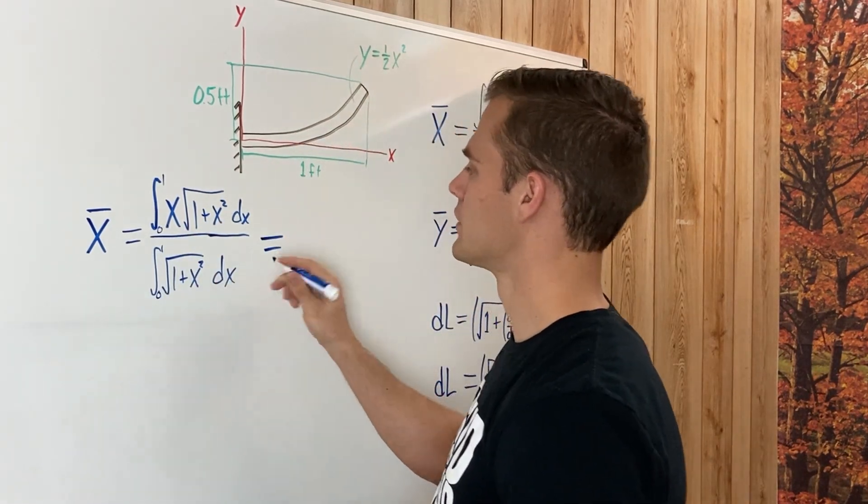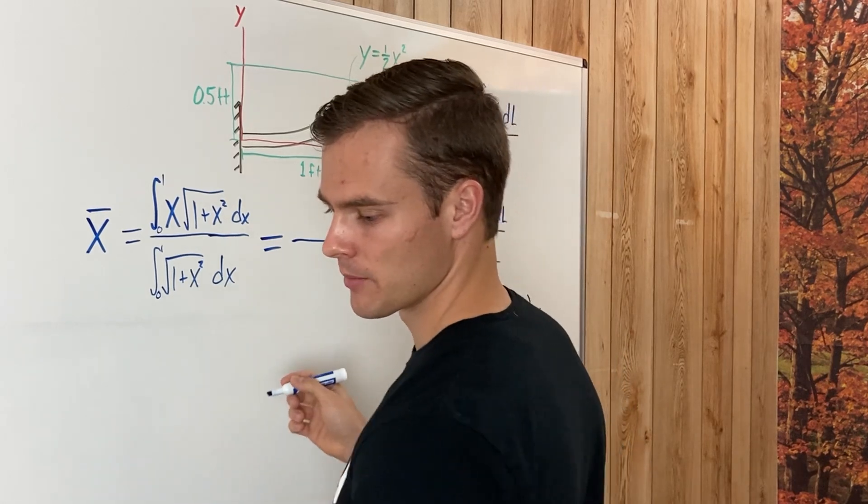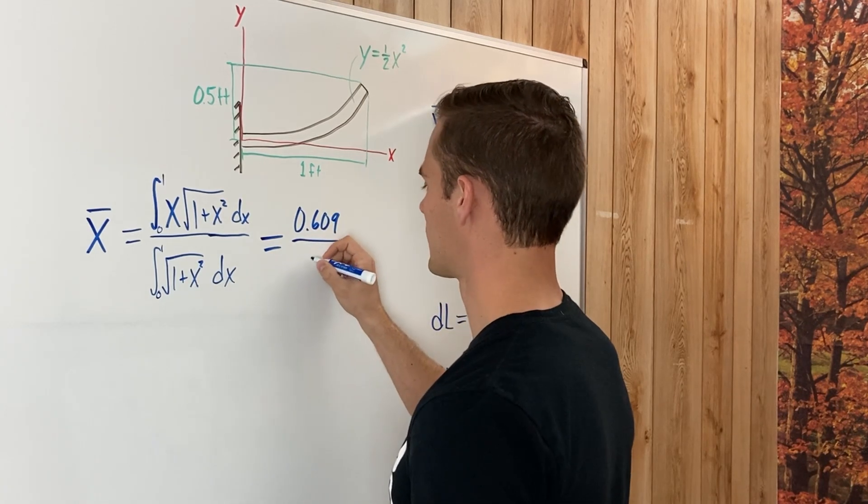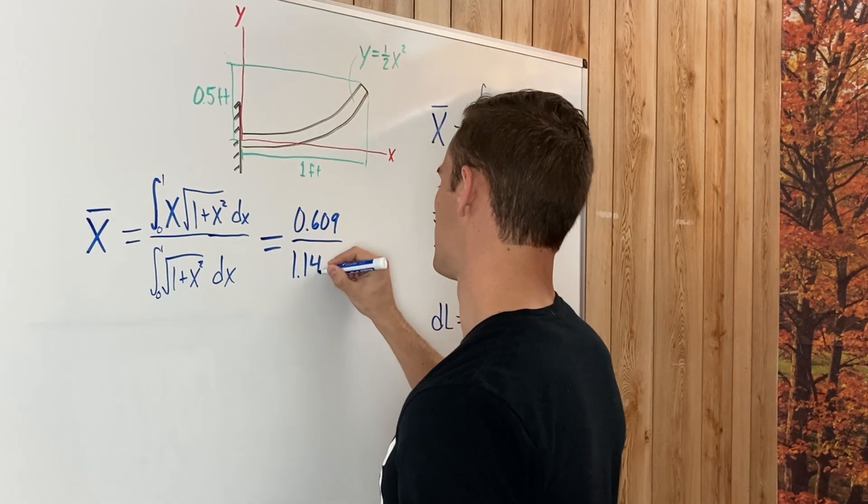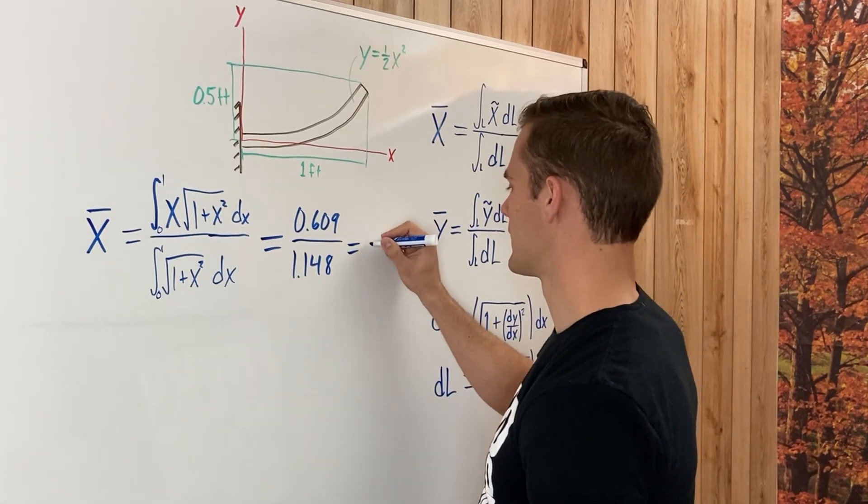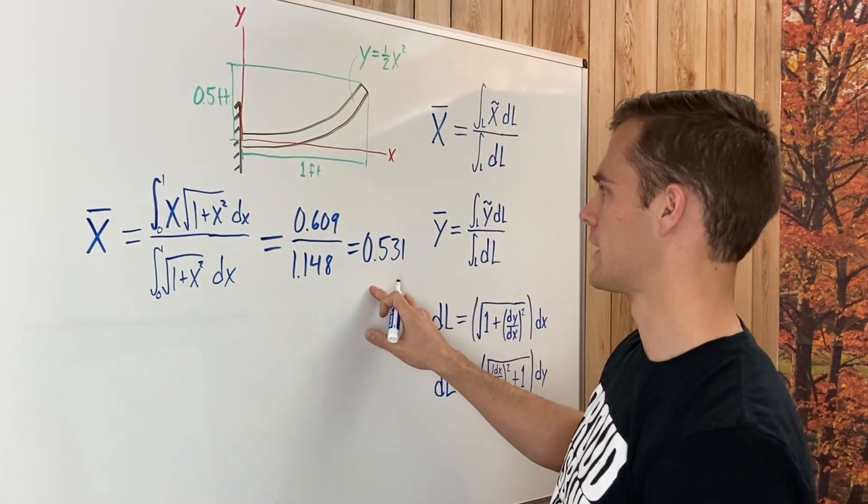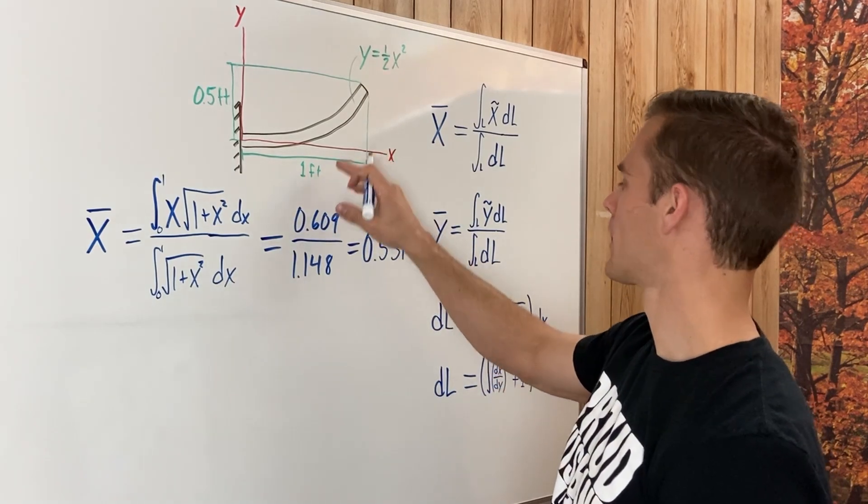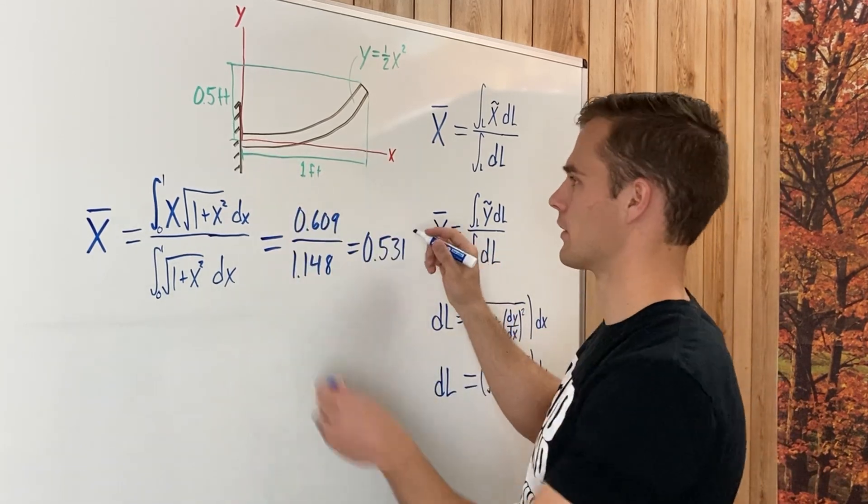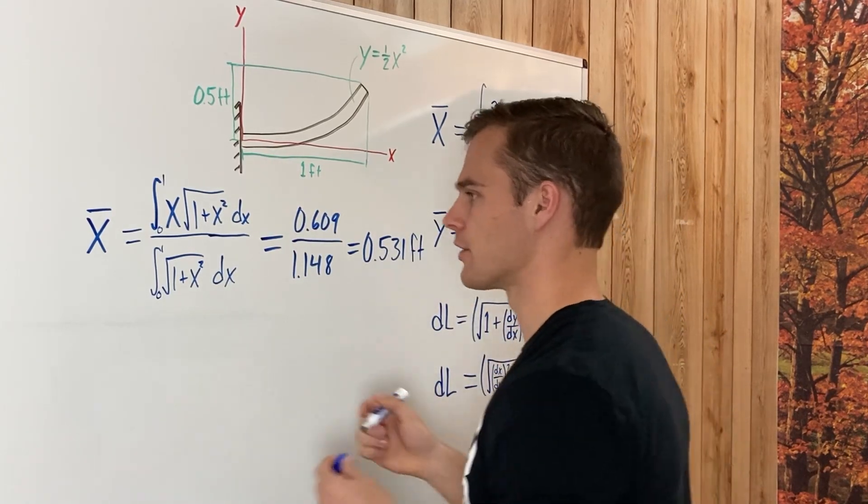So if you just, and you can do it by hand or plug this into the calculator, I'm not going to go through the steps of the calculus involved, but this top one is 0.609. After calculating that integral on the bottom is 1.148. And then dividing that by that, you end up getting that this is 0.531. And so the center of gravity in the x direction of this rod is going to be 0.531 feet along the axis, or away from this reaction or connection here.